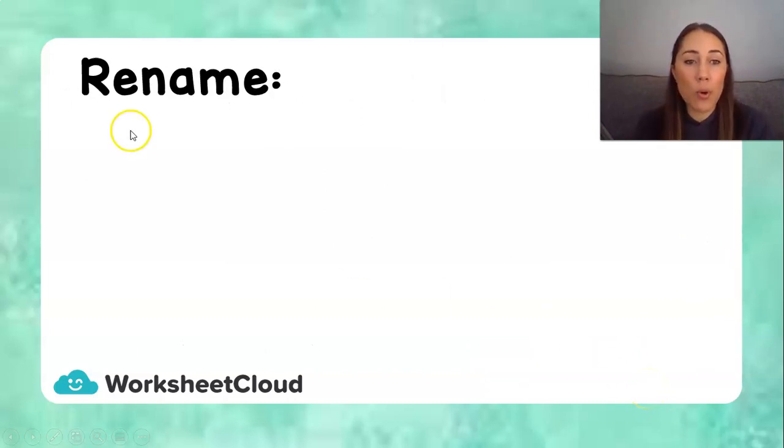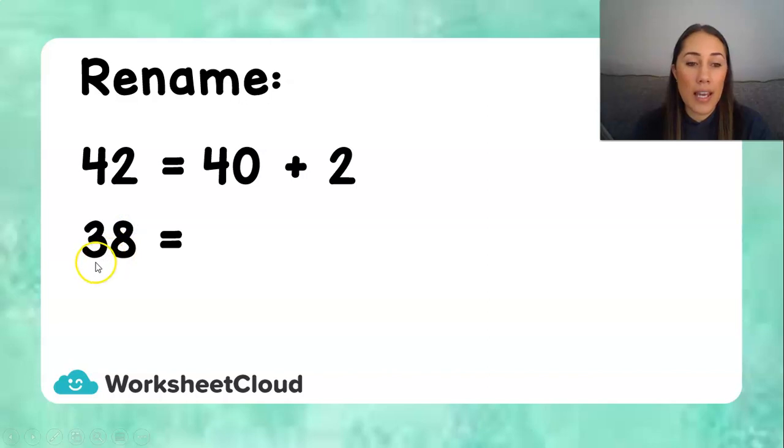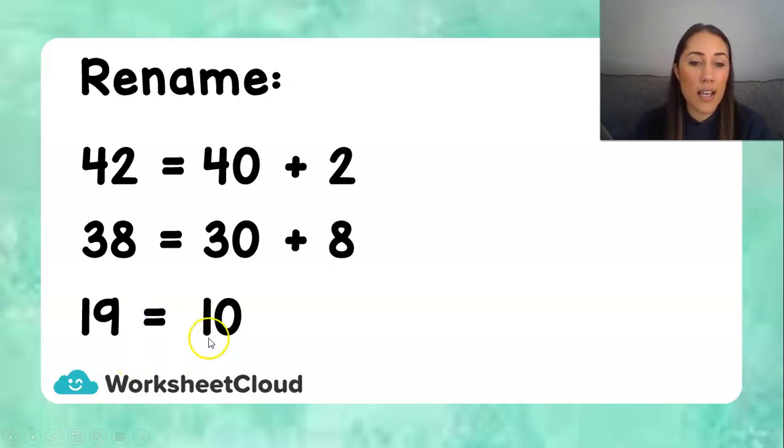So, let's do something we've already done before. We've already learnt how to rename, and this actually has other headings or instruction names. It can also be decomposed, or it can be expanded notation. So, rename, we learnt that 42 is a 40 plus a 2. A 38 is a 30 plus an 8. And 19 is a 10 plus a 9. This is 4 groups of 10 and 2 units. And 3 groups of 10, or 30, and 8 units. And 1 group of 10, and 9 units.